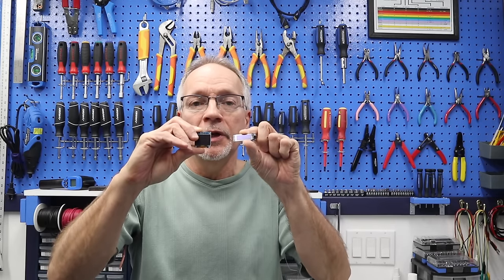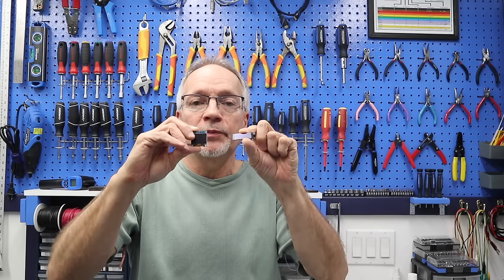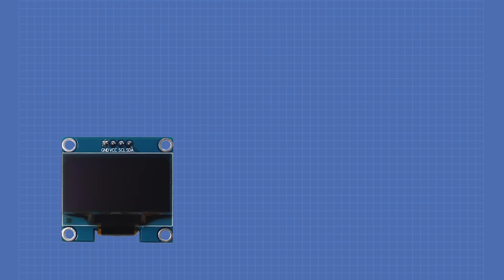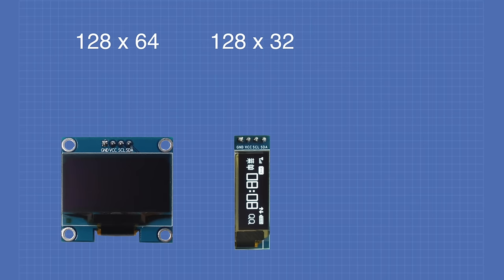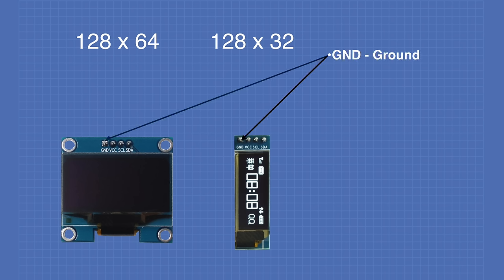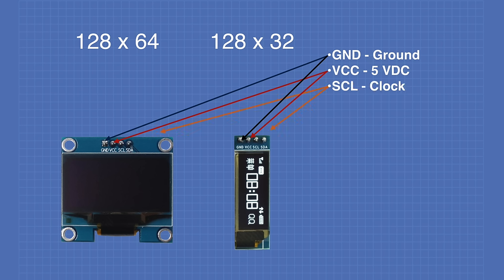We're going to begin by using the two I2C displays — the 128x32 and 128x64 displays. The connections on both displays are identical. On the far left is the ground pin, next is VCC which connects to 5 volts, then the SCL connection which is the I2C clock line, and finally the SDA connection which is the I2C data line. From the Arduino, connect ground to ground, 5 volt output to VCC, analog pin A5 to SCL, and analog pin A4 to SDA.